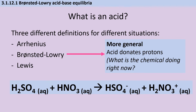It also depends on how the chemical is acting right now, not just what it could hypothetically do. Arrhenius acids like nitric acid and sulfuric acid can react together, and in this situation one of them — sulfuric acid — is functioning as an acid because it's donating a proton, but the other one, nitric acid, is functioning as a Brønsted-Lowry base because it's accepting a proton.